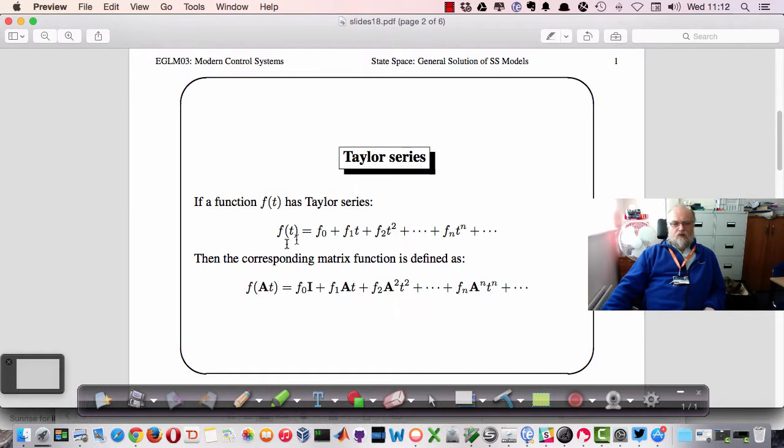The same sort of approach would apply to a matrix function. So if we had a function which was defined as some kind of matrix multiplied by t, then the corresponding Taylor series would be f0 times the identity matrix plus f1 times A t and so on up through the powers of t. Notice we're multiplying the matrices as well as we go up in this series.